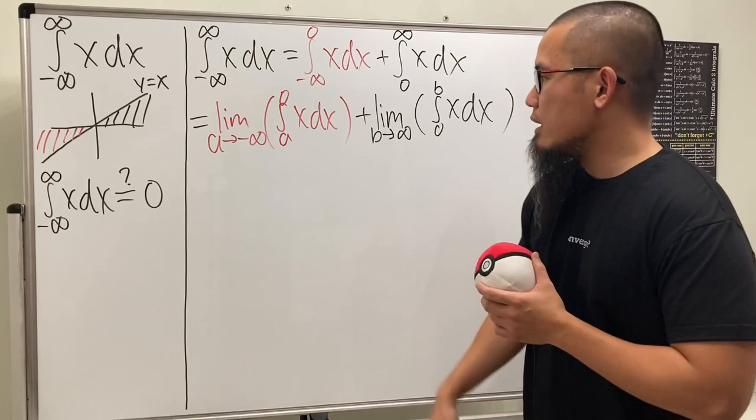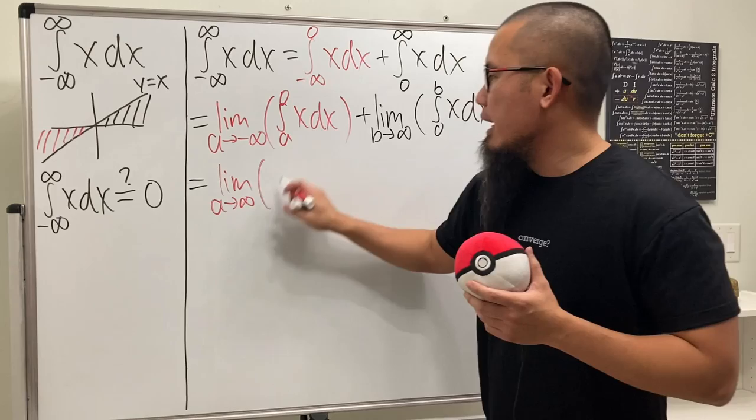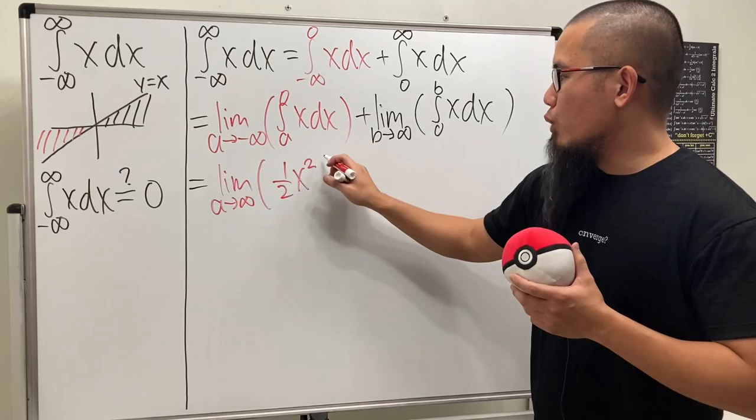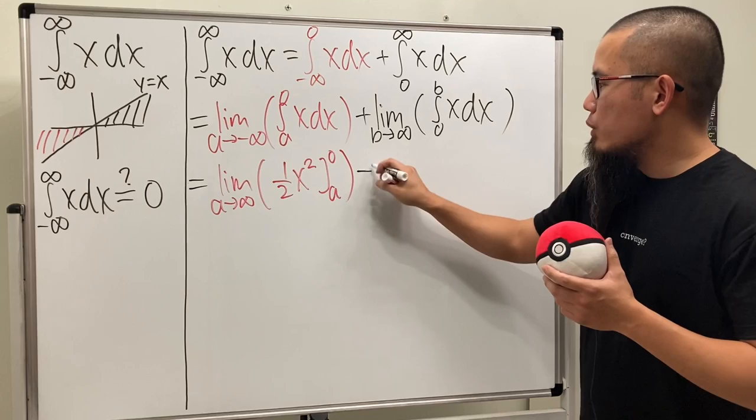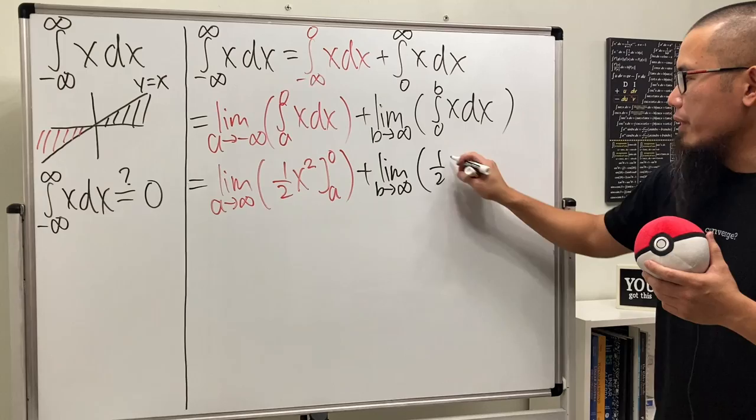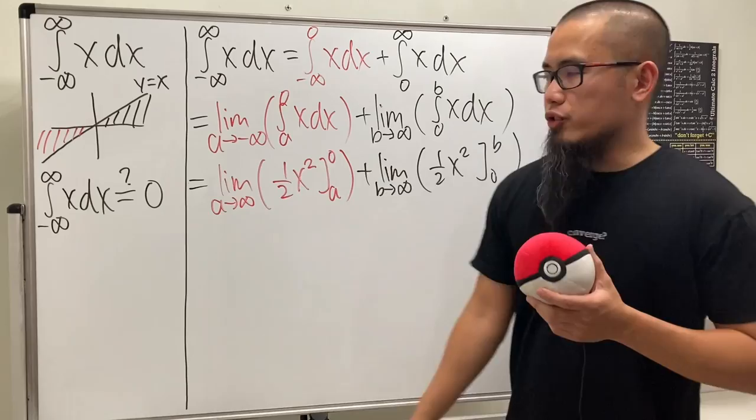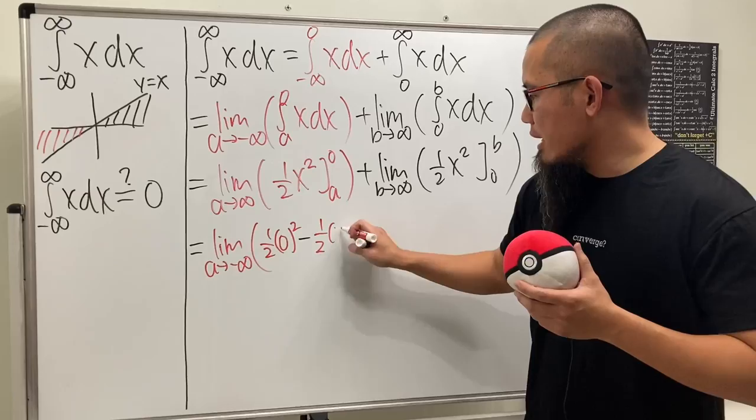Now we integrate and trust our limits. For the first one, the integral of x is one-half x squared, and we plug in from a to zero. For the second one, it's the same — one-half x squared going from zero to b. After plugging in the numbers, this becomes a limit question.